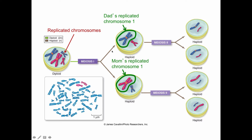In the first division cycle, we're going to reduce the total number of chromosomes, but they're still joined together at the centromere. Then in our second division cycle, we're going to pull those chromosomes — those sisters — apart, and then we're going to end up with four cells.